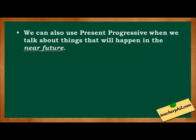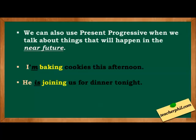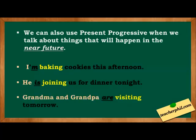The last reason: we can use present progressive when we talk about things that will happen in the near future. Examples: I am baking cookies this afternoon. He is joining us for dinner tonight. Grandma and grandpa are visiting tomorrow. These three sentences all show actions that will happen in the future, but we can use present progressive with them.